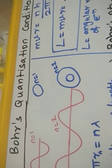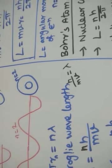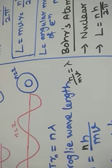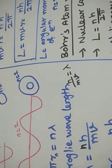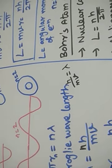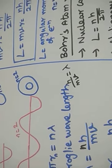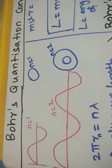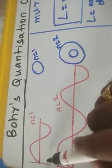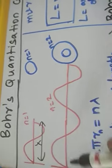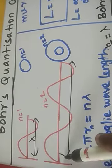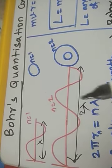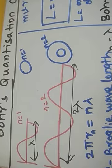Bohr noted that since electrons are revolving around the nucleus, there is a wave associated with that motion as well. He proposed that there are fixed orbits, and electrons revolve only in those fixed orbits. In those orbits, certain electrons will have a de Broglie wavelength of one lambda, certain others two lambda, and so on up to n lambda.